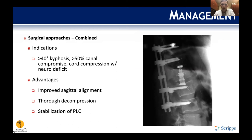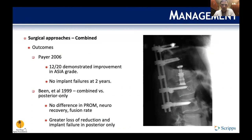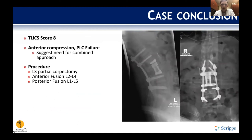A combined approach is typically indicated for kyphosis greater than 40 degrees and significant canal compromise, especially from an anterior retropulsed fragment. The advantages are the best of both worlds: better sagittal alignment, thorough anterior decompression, and stabilization of the posterior tension band. Obviously it's a bigger surgery with more morbidity. A 2006 study by Payer showed good results with no implant failure. Ben also showed no difference in patient-reported outcomes between combined and posterior-only, but less implant failure in the combined group.